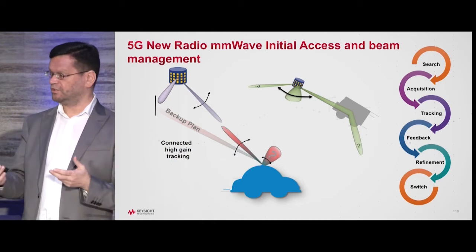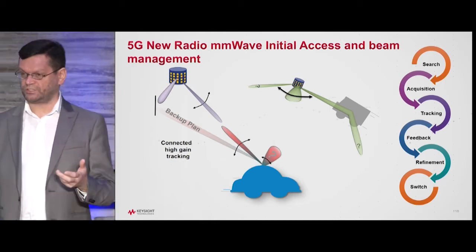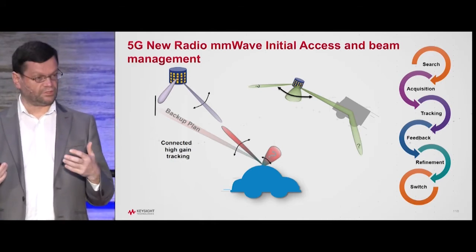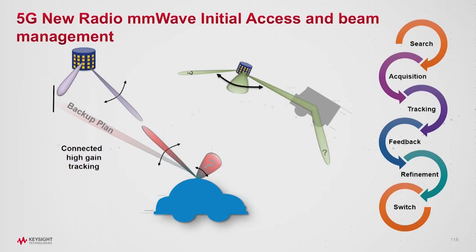We have to, first of all, search for base stations. You've got to then acquire the signals. You've then got to track them. You've got to feed back. You've got to refine, and then you've got to switch when necessary. And this whole process is happening at rates that we have yet to discover, because we haven't really studied this problem yet in 3GPP.